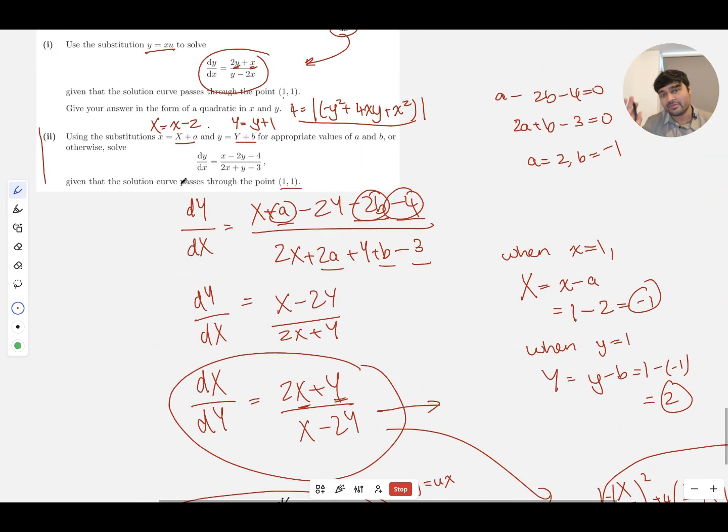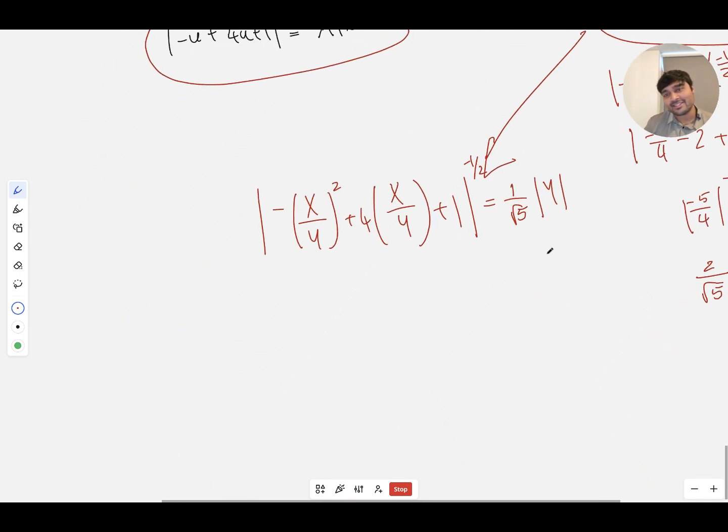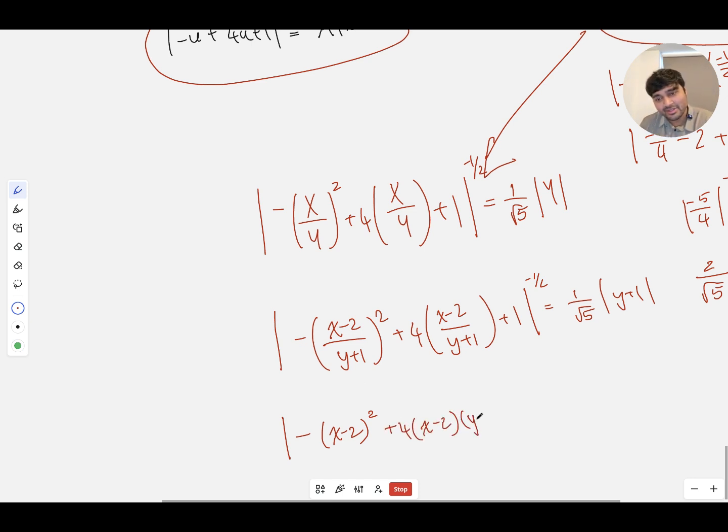And now all I do is substitute both of those into this here. And thankfully, it doesn't tell me to simplify it or anything. Very thankfully, it would get very messy otherwise. So I'll just substitute these in here. So I'll get (-(x-2)/(y+1))² + 4(x-2)/(y+1) + 1 to the power of -½ equals (1/√5) times the absolute value of (y+1). And you can actually cancel out the (y+1)'s like we did earlier with the modulus of x. And so you get absolute value of (-(x-2)²+ 4(x-2)(y+1) + (y+1)²)^(-½) equals 1/√5. And again, you can take the reciprocals and square and stuff and make things a bit nicer, but I'm just going to leave it like that for now.